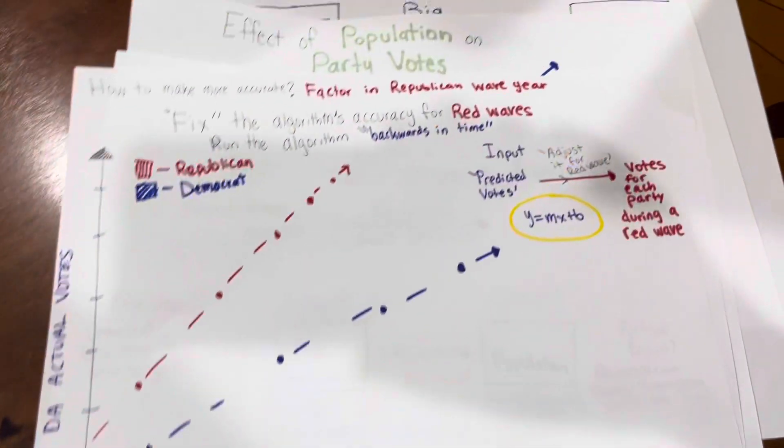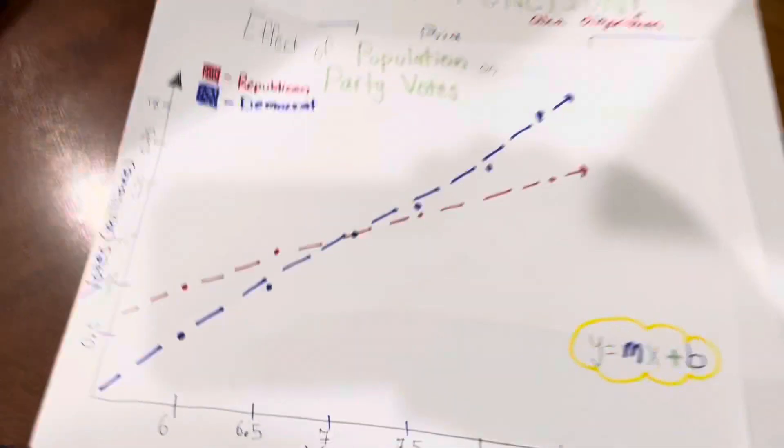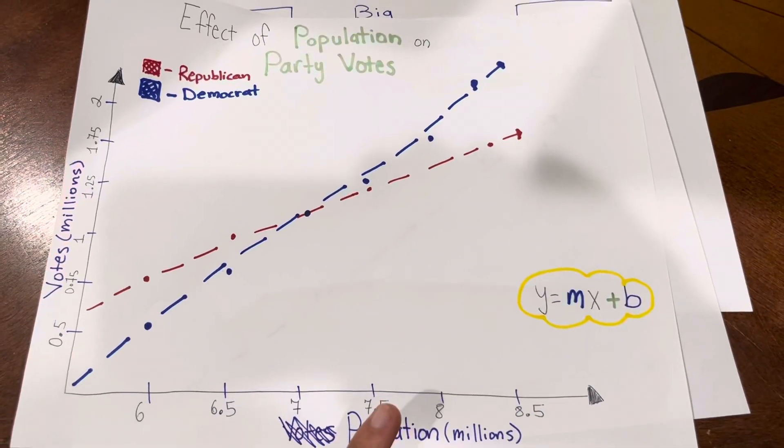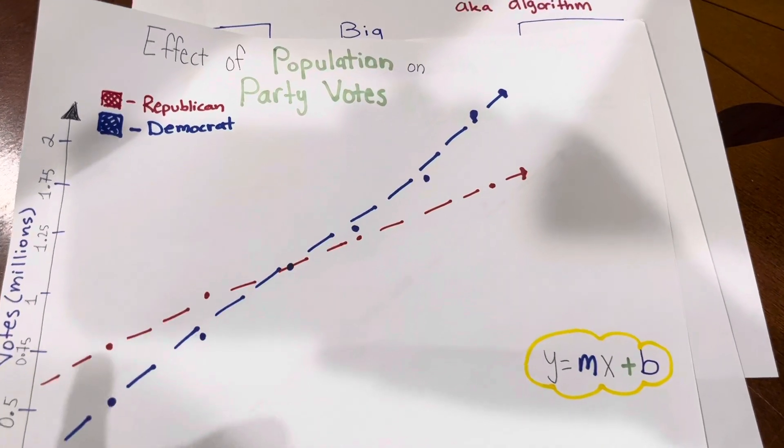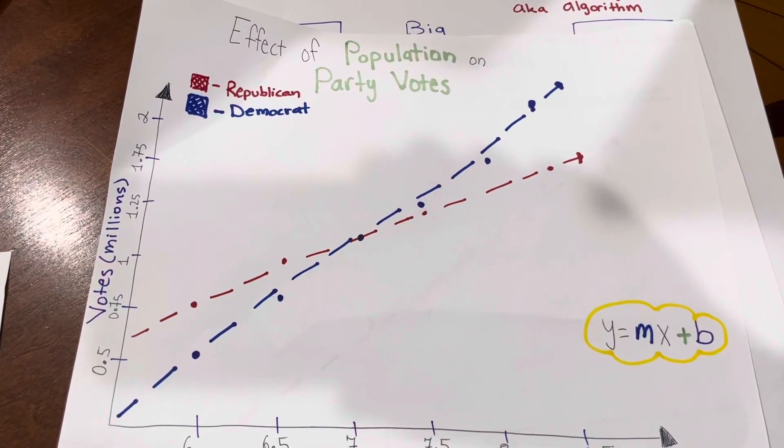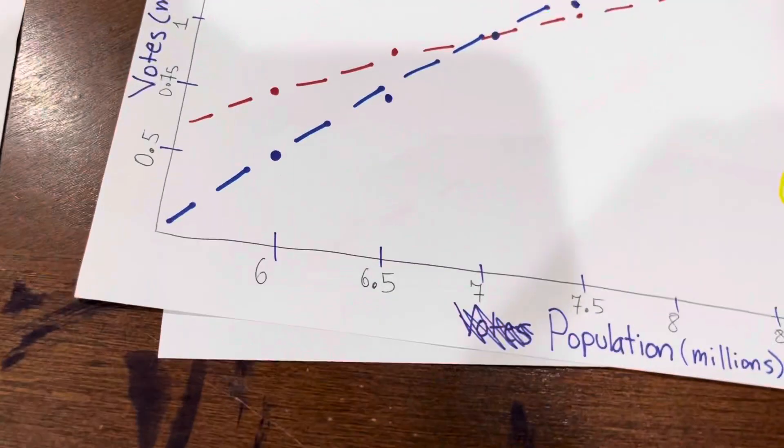What I essentially did was — if you remember the algorithm for predicting party votes, you could use it to predict future party votes, which we did and gave Terry McAuliffe a 6% victory, or you could rerun it in the past. We can test the accuracy of my algorithm because it's unbiased and predicts who would win without any influence of a red wave or blue wave. We could test the average accuracy of the algorithm and shift it accordingly.